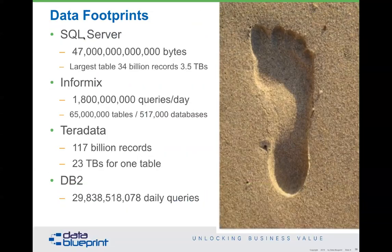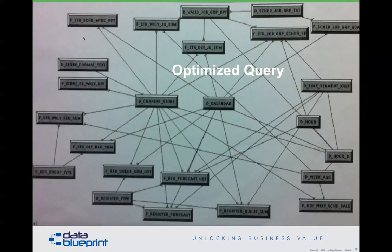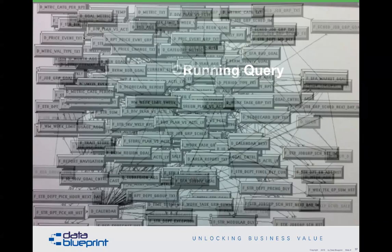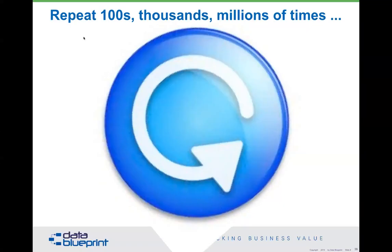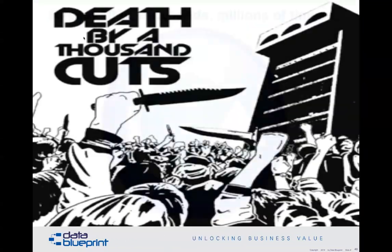Here are some numbers from various organizations I've worked with. One organization had almost 30 billion queries a day. One of those queries might look something like a very complex query. This organization simply didn't understand that you could optimize your queries. It may not seem like a lot to go from a complicated query to a slightly less complicated one — but if you run that query 30 billion times a day, those little bits add up to what we call death by 30 billion cuts.